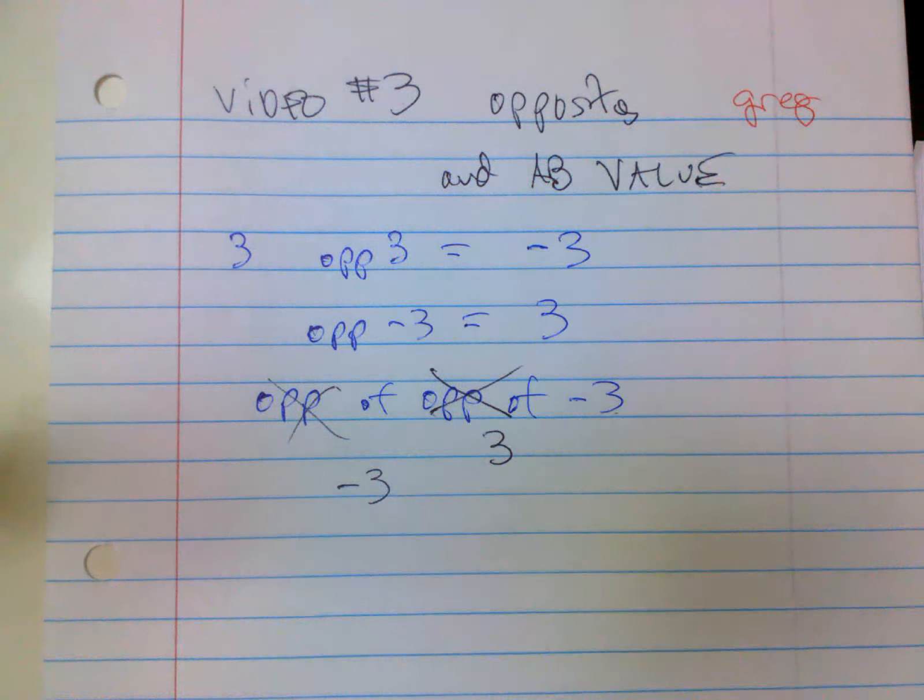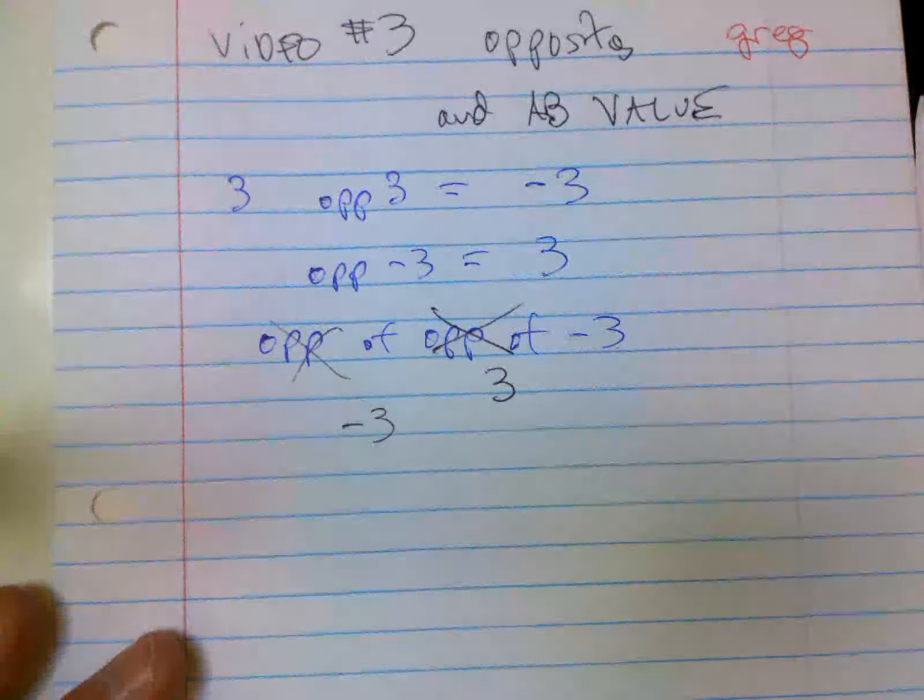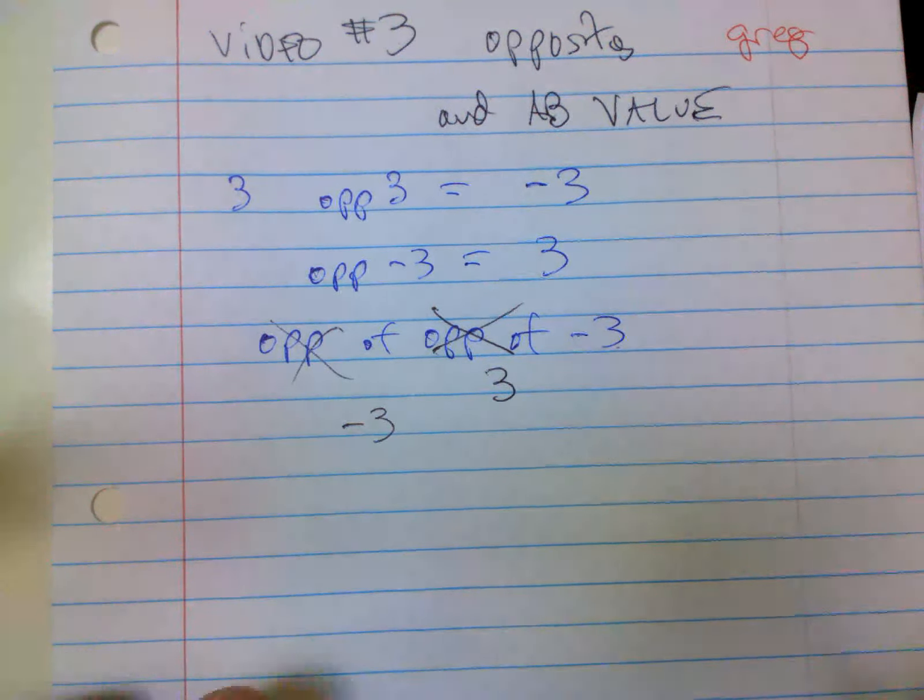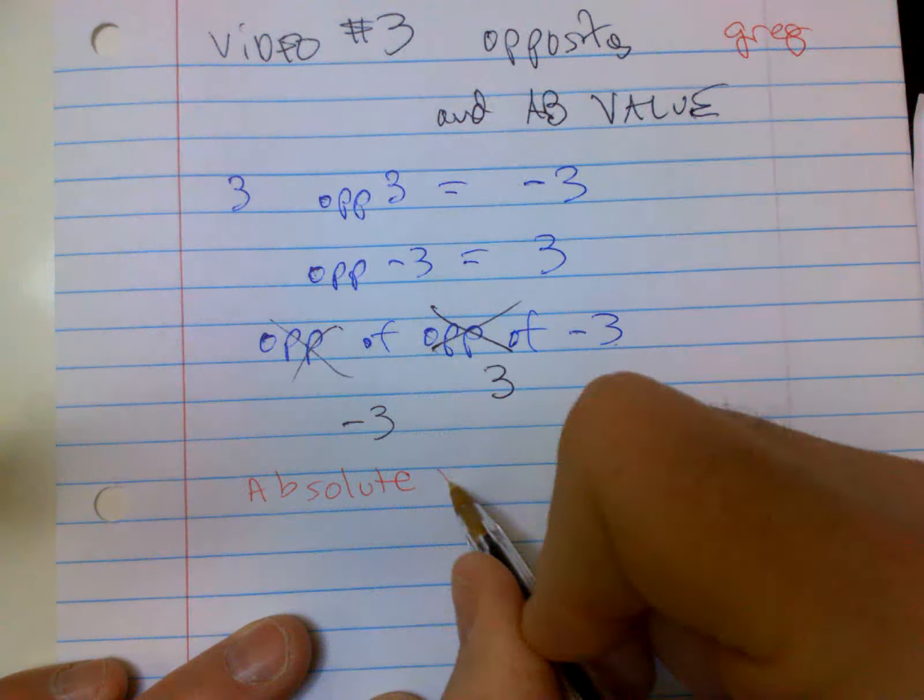Then the opposite of three would be negative three. Oh, wow. So I didn't even change. All right. Fair enough. So here's where it gets confusing when we add absolute values. Absolute value. I'll spell it out for those who don't remember. Absolute value.